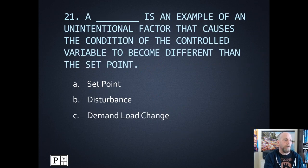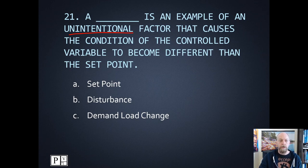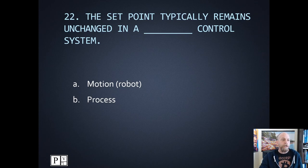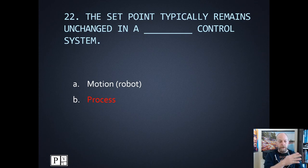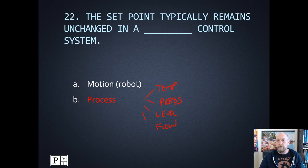Number twenty-one: which one is an unintentional factor that caused the condition of the control variable to become different than the set point? Unintentional would be a disturbance to the system. Number twenty-two: the set point typically remains unchanged in which type of control system? In a process control system, the set point would be stagnant. With robotics or motion control, you're trying to get the motor to a specific speed or a robot to a specific point, so the set point is always changing. In process control — temperature, pressure, level, or flow — the set point is usually consistently at a certain value.